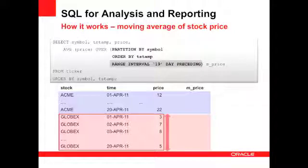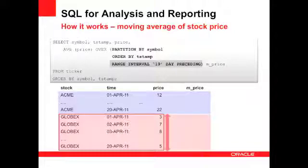The next step is to determine how to compute the average — that is, how many records should be used. In this case the interval is set as current row plus 19 days preceding, which gives us a total of 20 rows, from the 1st of April to the 20th of April.